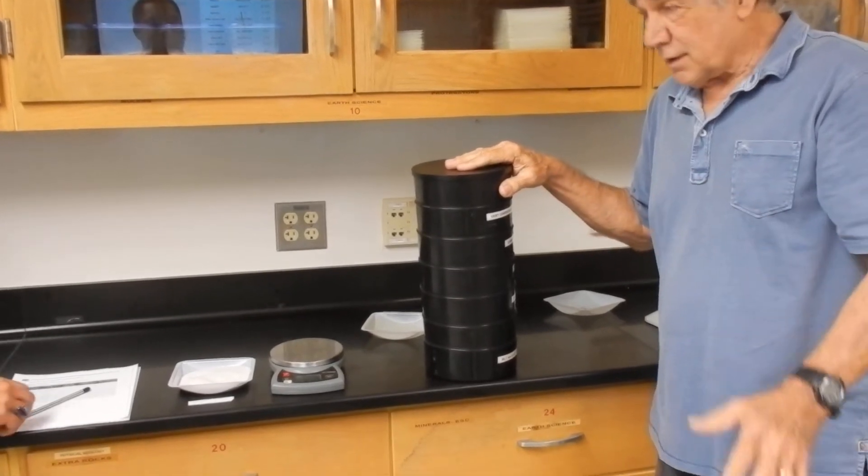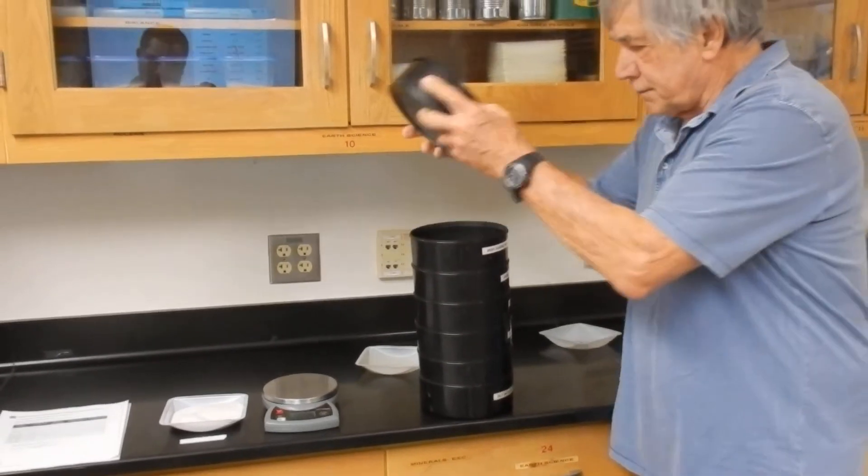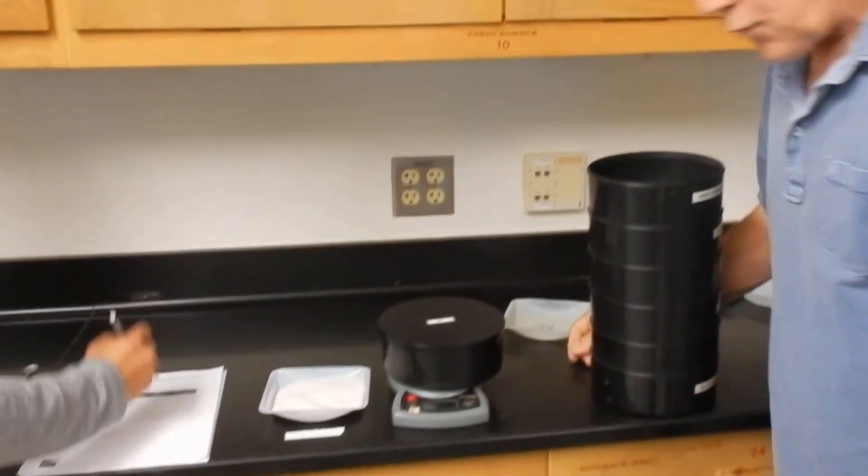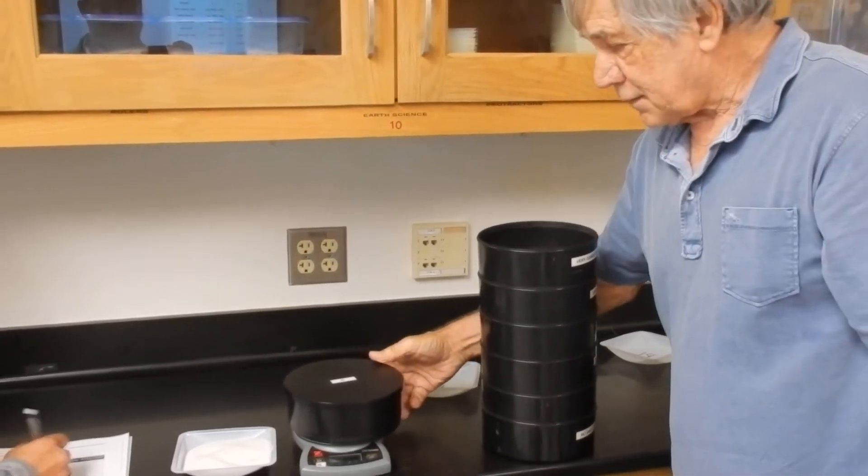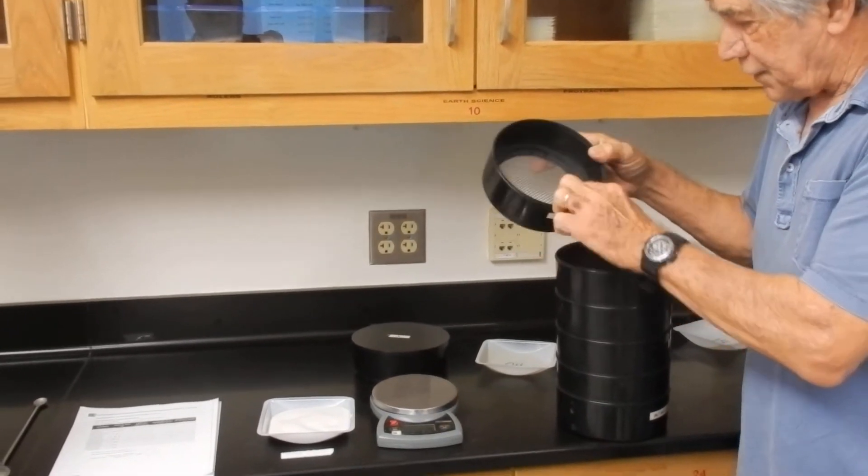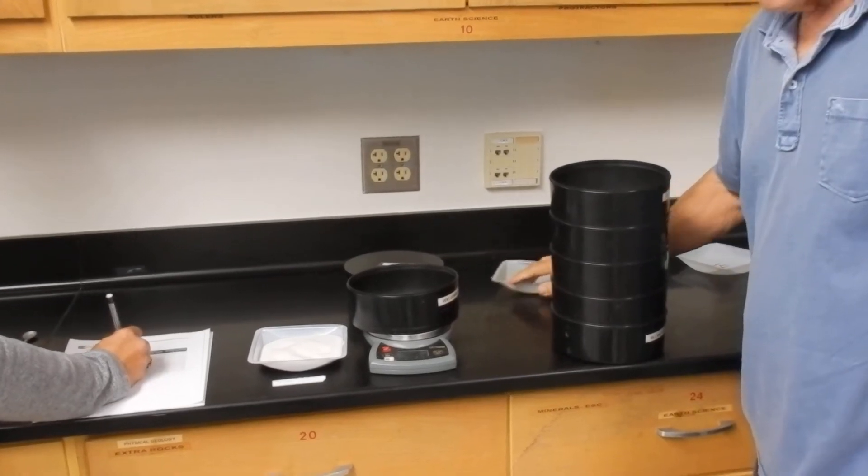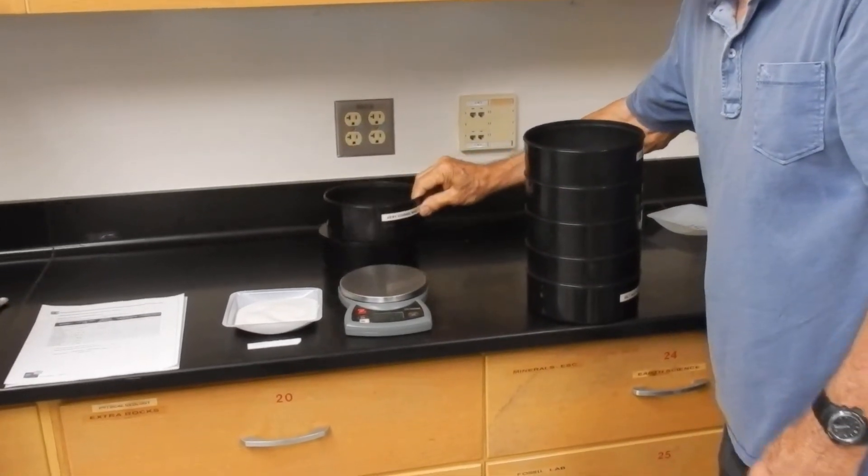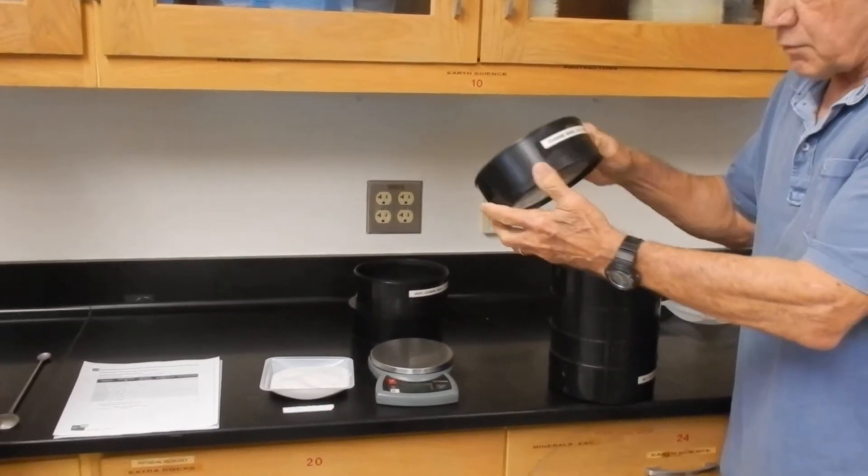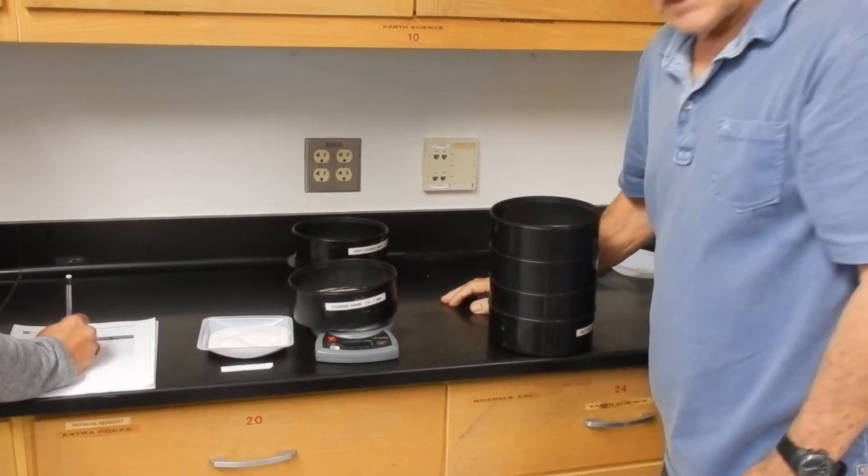So here we go with gravel, 229 grams. Coarse sand, very little coarse sand here. 161 grams. That was very coarse sand. Here we are with coarse sand, 186 grams.